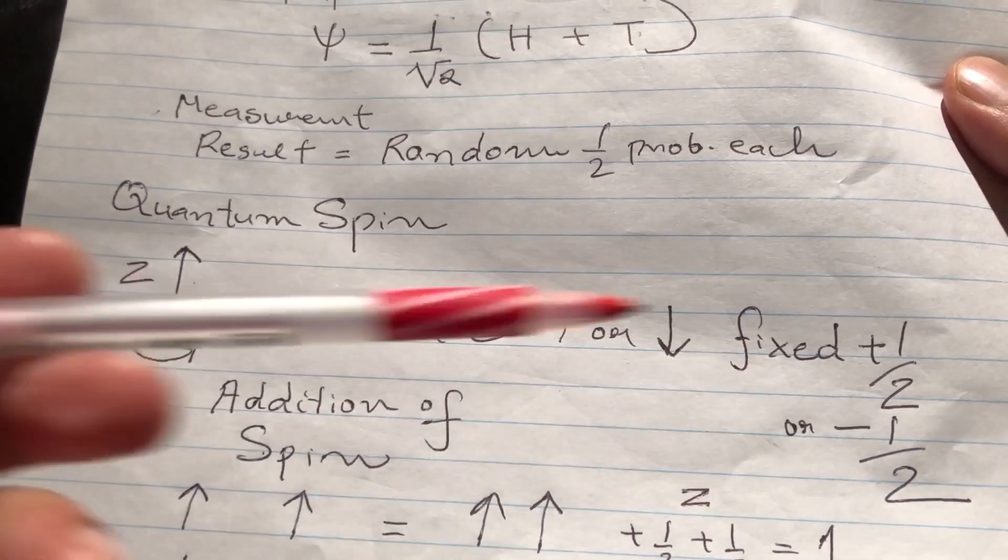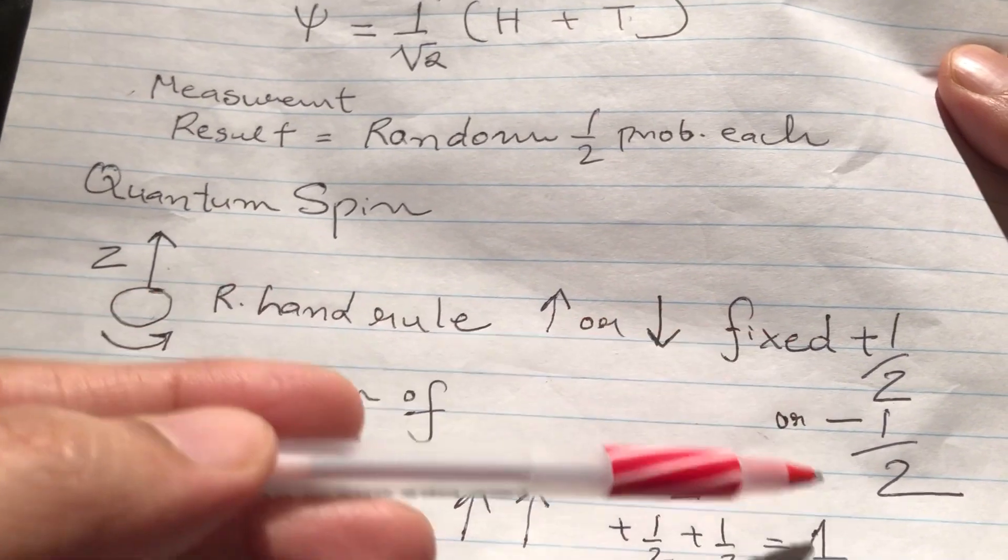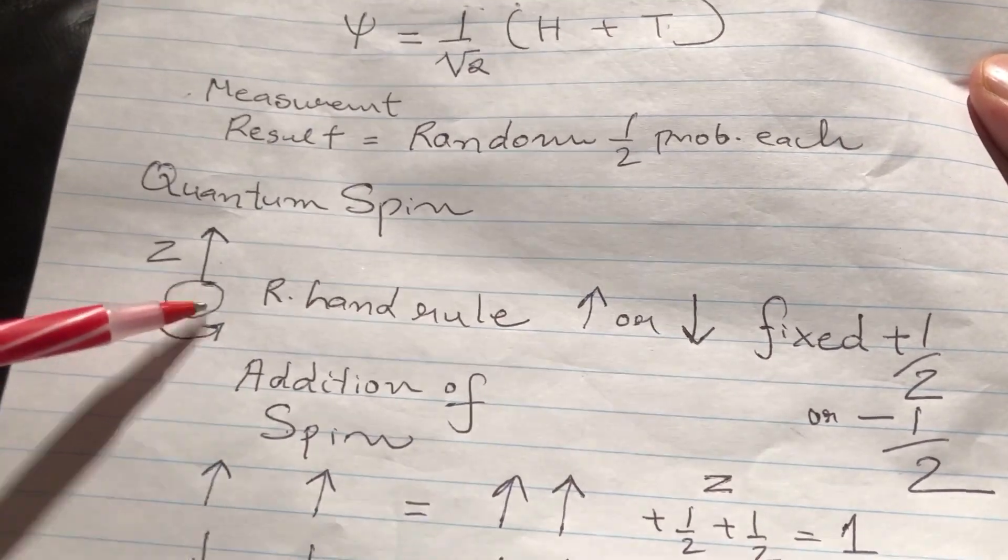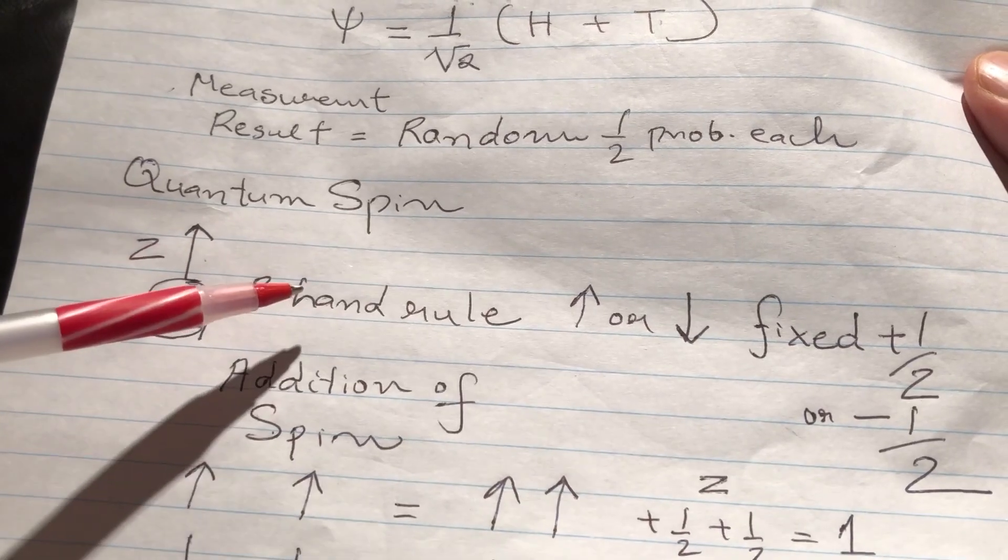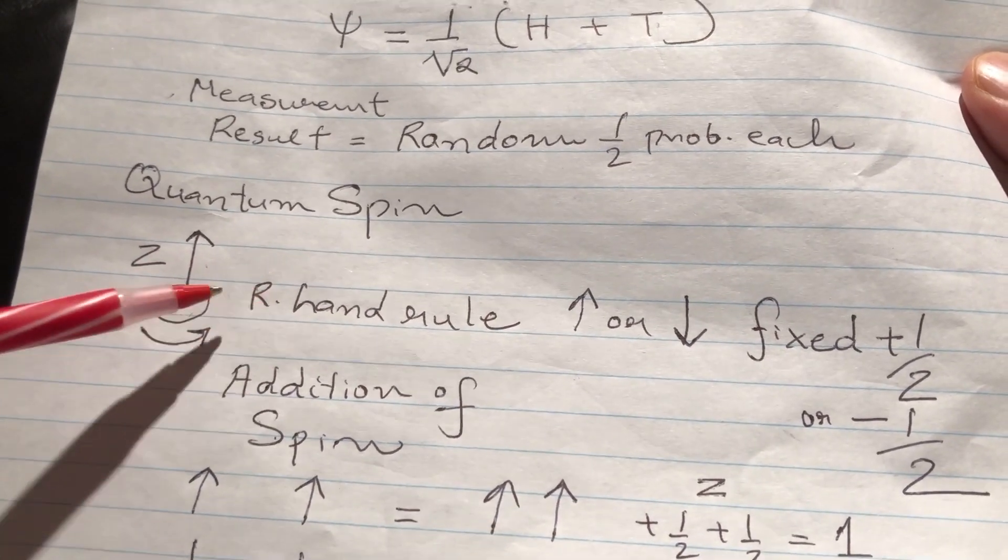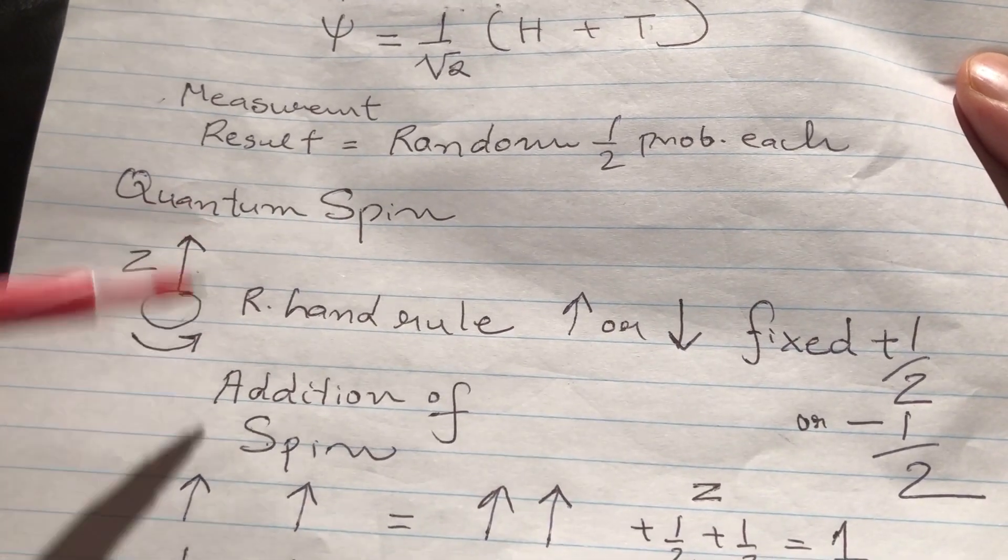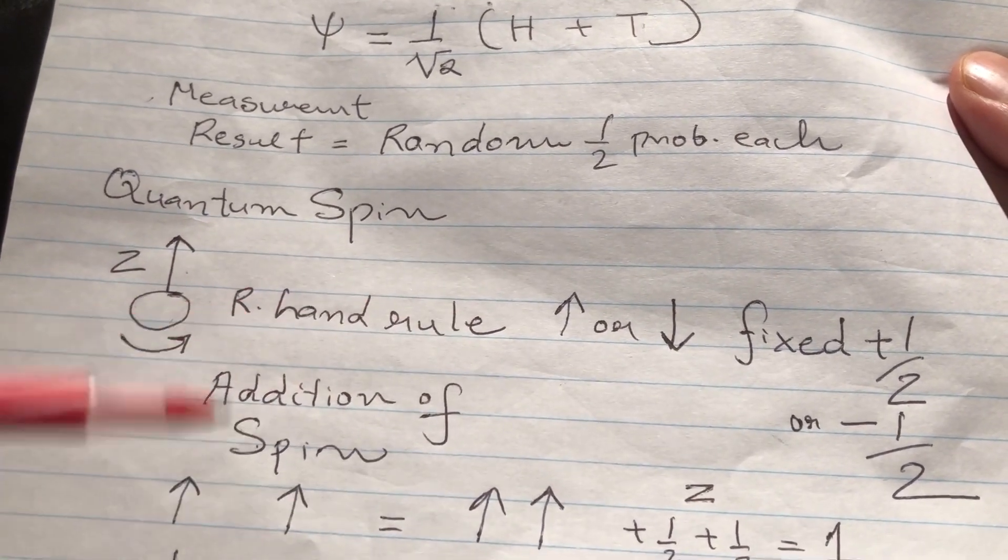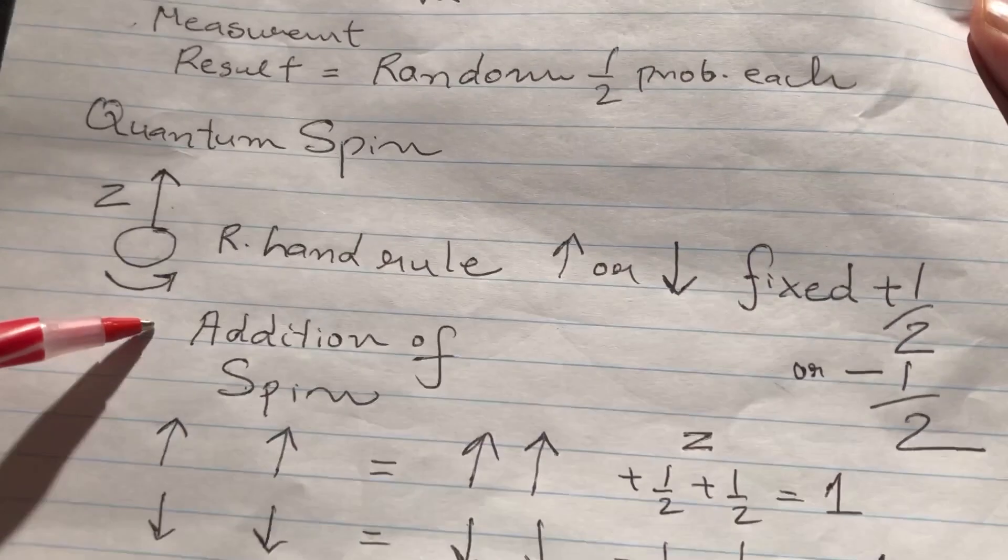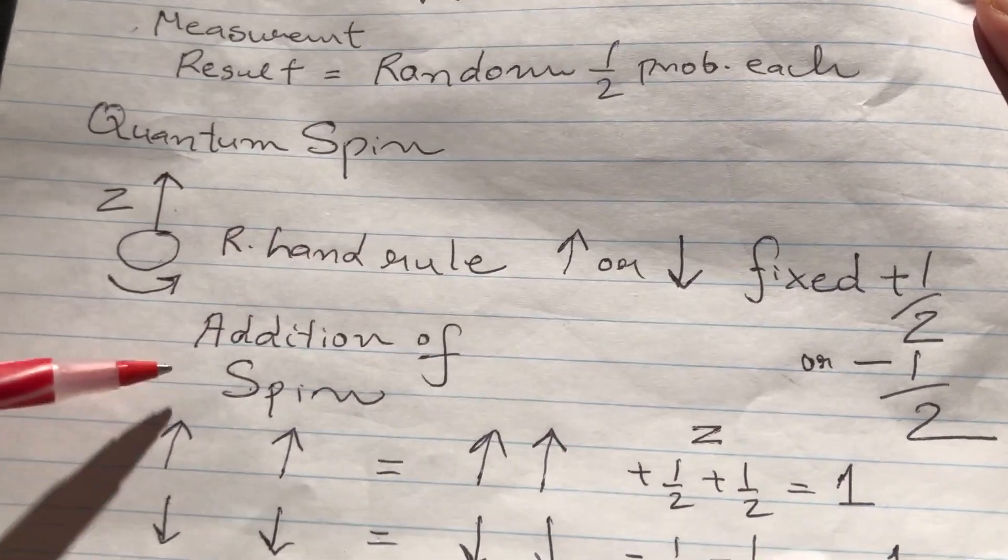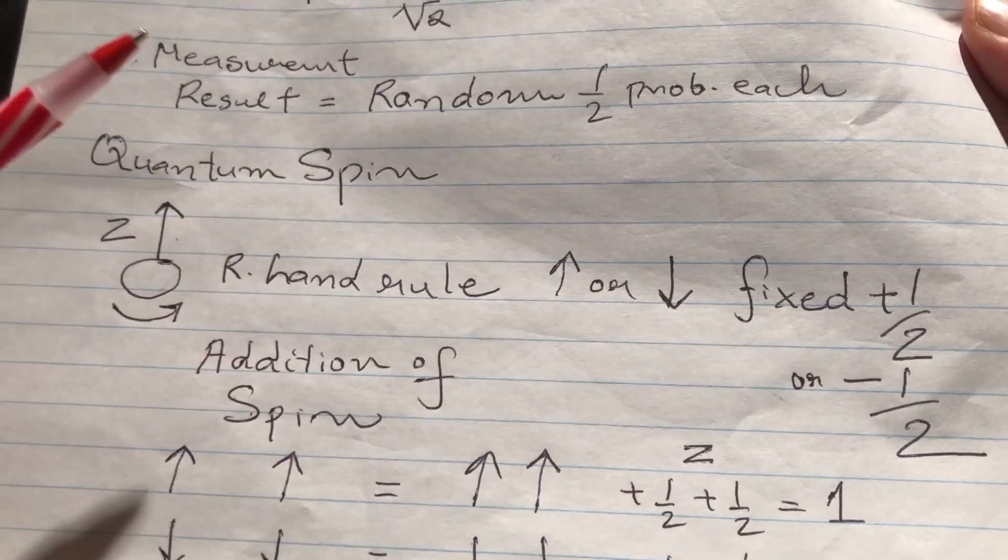Either it's plus half or minus half. You cannot stop the electron, you cannot make it go faster or slower—you'll always get this fixed result. This is like getting electric charge: if the electron has electric charge of minus one, you can't make it minus two or minus half. It's the fundamental property of the quantum. This is quantum spin. Next we have to study how do we add spins—if we have two electrons, how do we add the spin?